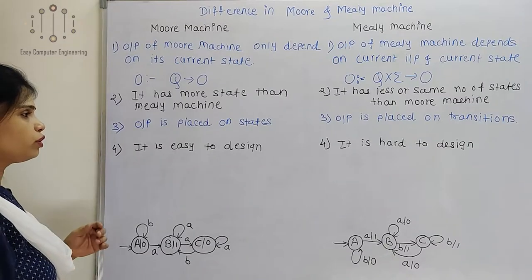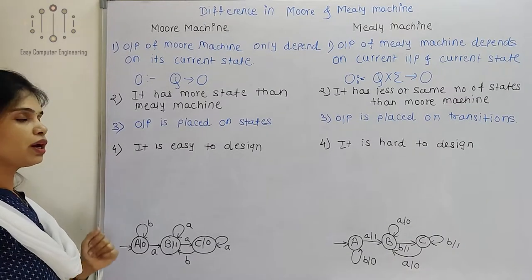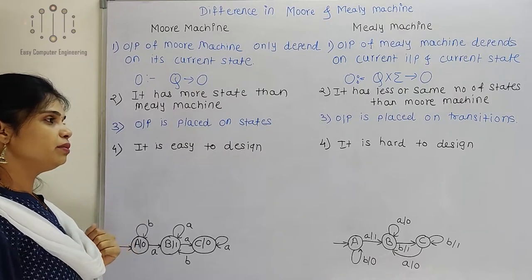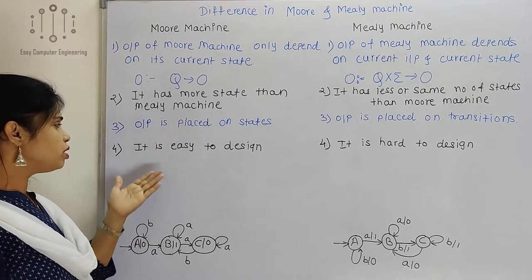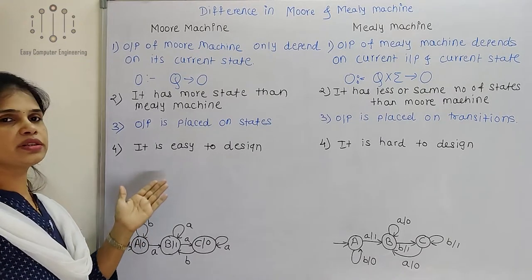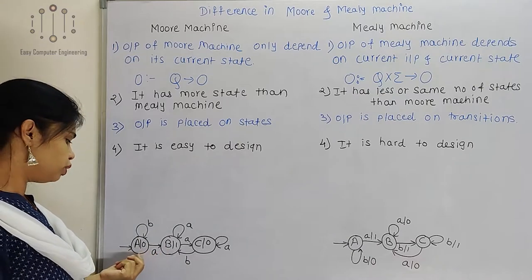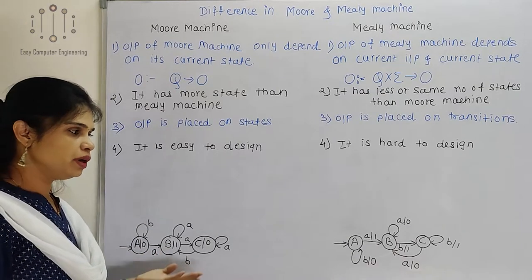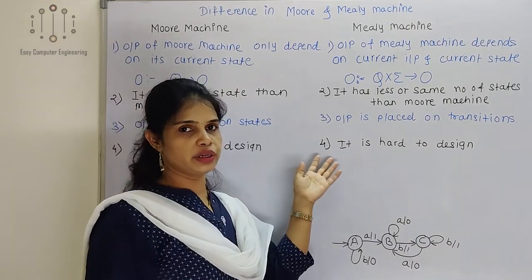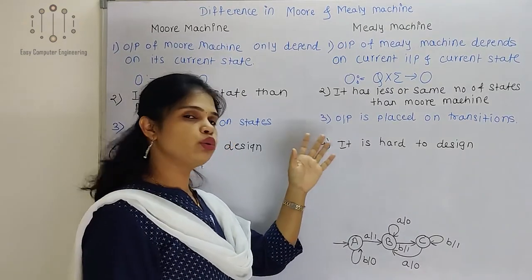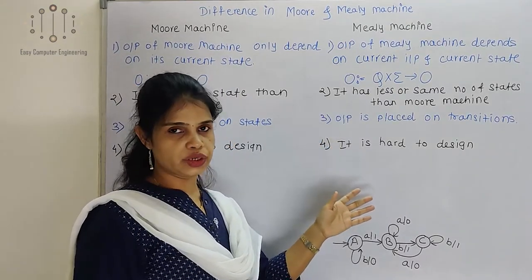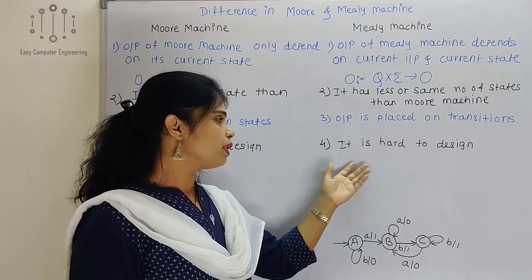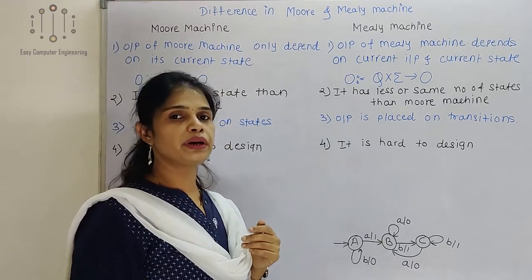This is the fourth difference. Moore machine is comparatively easy to design and Mealy machine is hard to design. Because in Moore machine it is just like a DFA where we give output on the state. But in Mealy machine we have to apply logic to determine which transition will have which output, so it is comparatively hard.